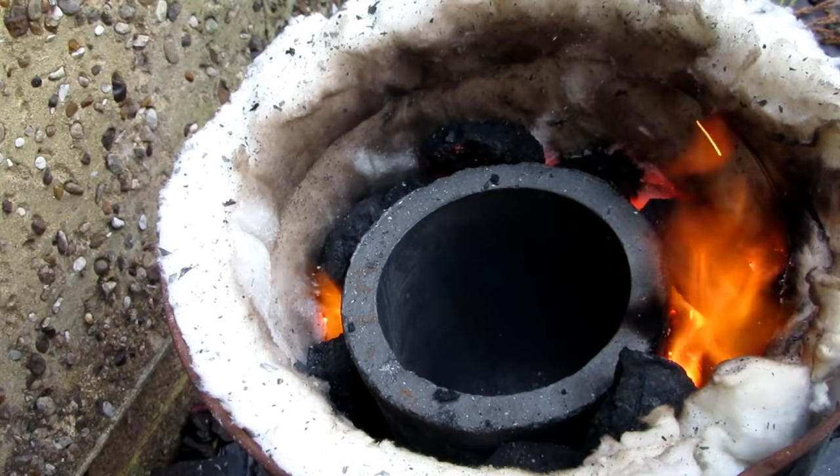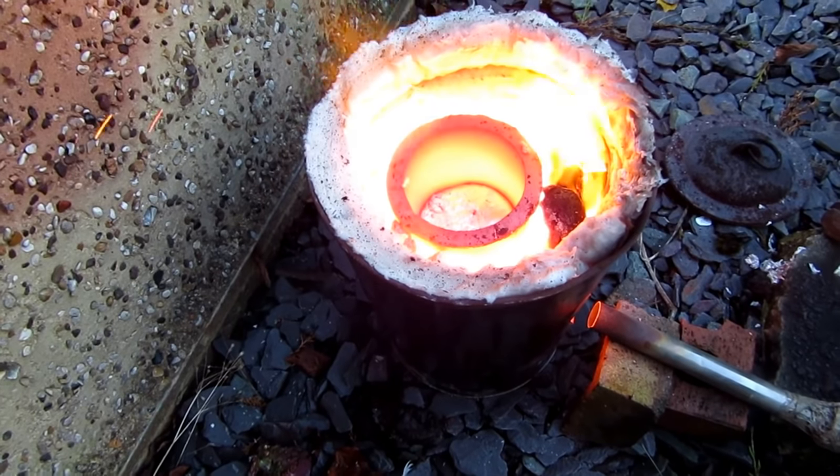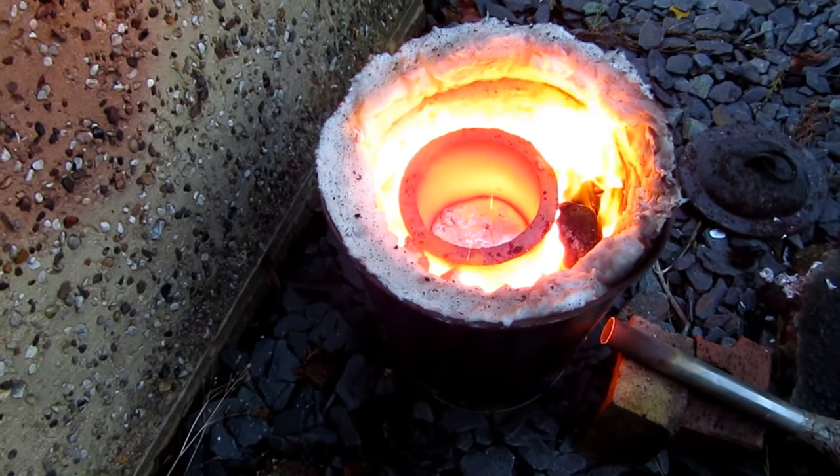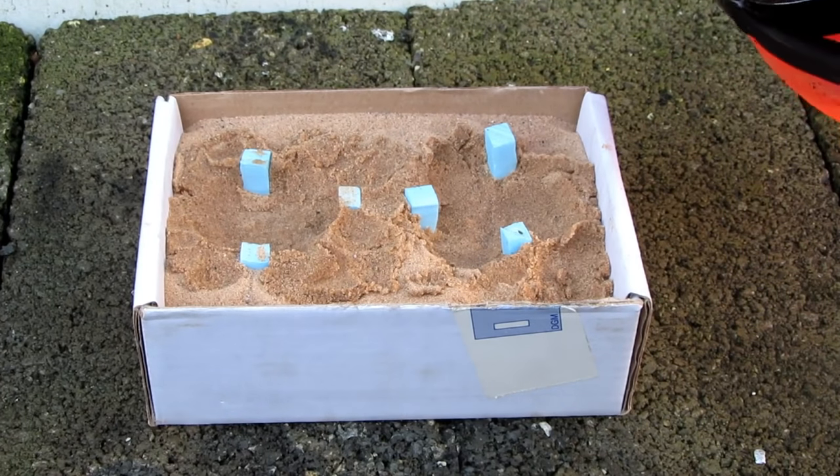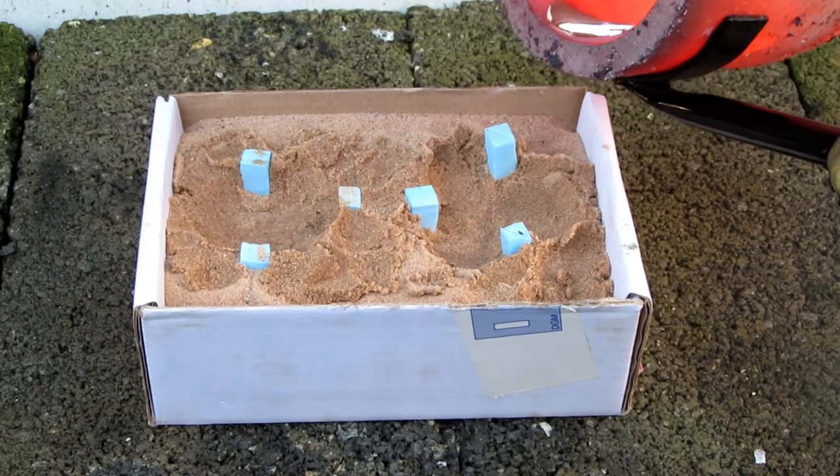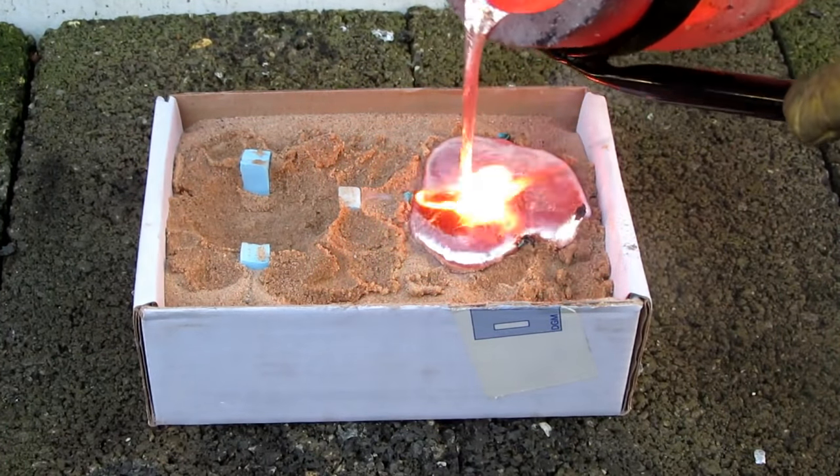I then fire up the furnace and melt down some scrap aluminum. The molten metal is poured into the bowl sections and the metal instantly vaporizes the foam and takes its place.